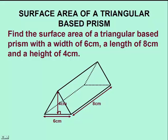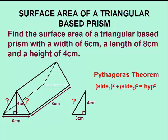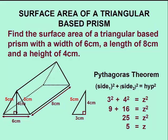We are almost ready to calculate the surface area; however, we are missing an important dimension. To find this dimension, we can use the right angle triangle that appears in the base of the prism, the height of which is 4 centimeters, and the base is half the width of the prism, which is 3 centimeters. We can use Pythagoras' theorem to figure out the missing side. We'll substitute in our values, square the two sides, take their sum, and then take the square root to find the missing dimension of 5 centimeters.